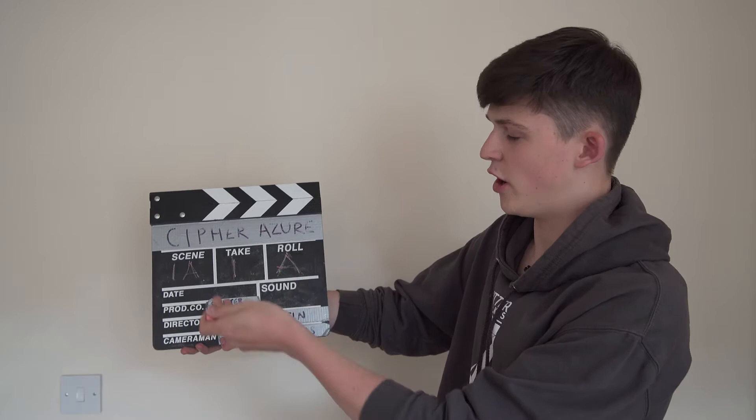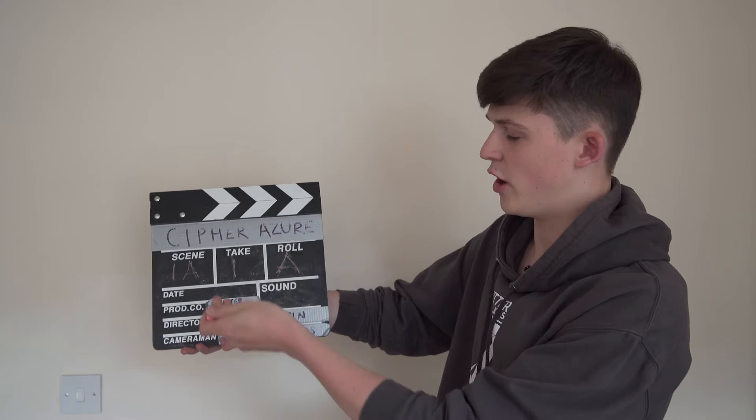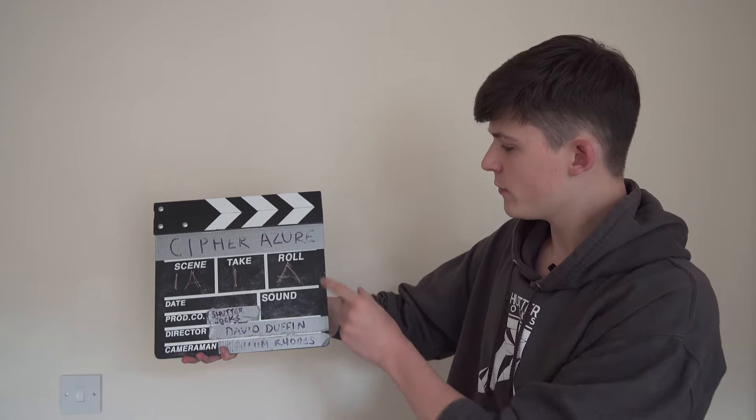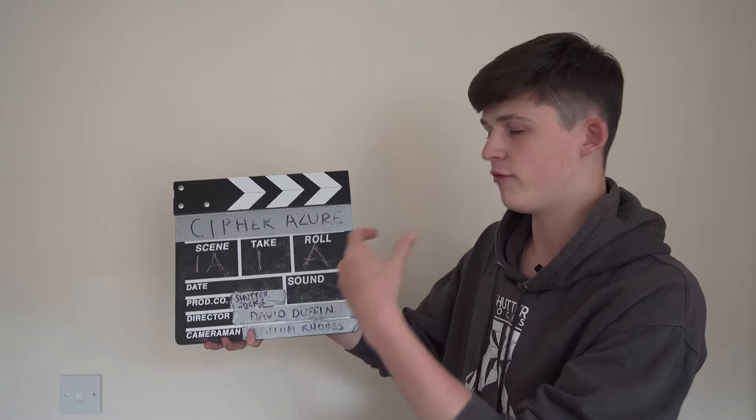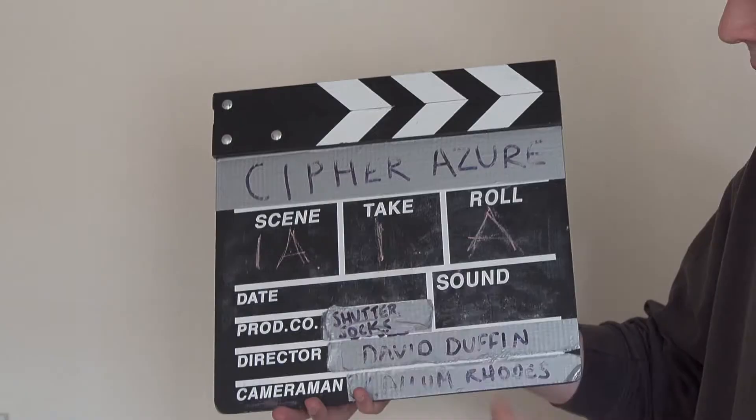Your take — obviously there's a number of takes you're on, so for this purpose we put take 1, but it could be take 2, 3, doesn't matter, that also tends to go up. Your roll — you usually have roll A and roll B, that is for what kind of memory card you're shooting on the camera. That's just so your editor knows which card to look on, so he's not taking ages trying to find everything.